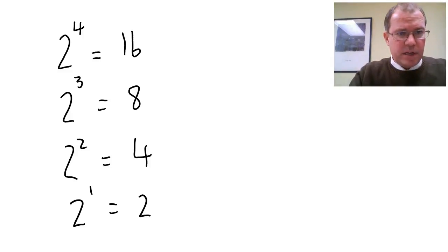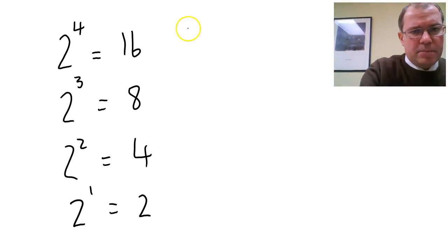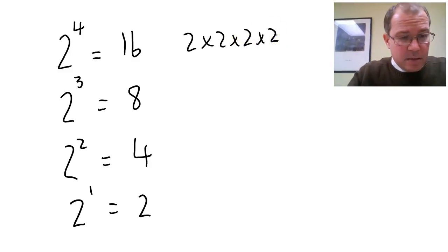We're going to start by considering what 2 to the power of 4 is. 2 to the power of 4 means 2 times 2 times 2 times 2, so that's 16. Then 2 cubed is 8, 2 squared is 4, and 2 to the power of 1 is 2.